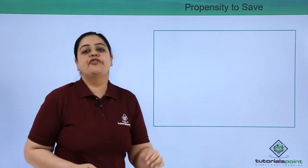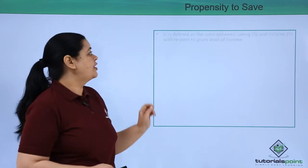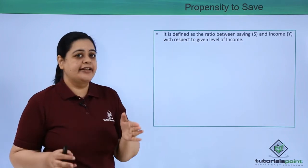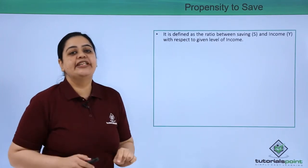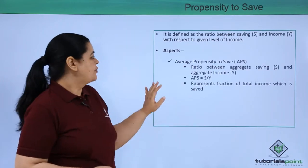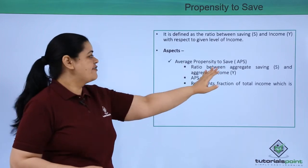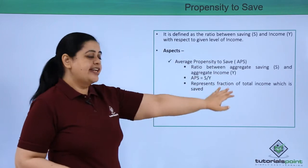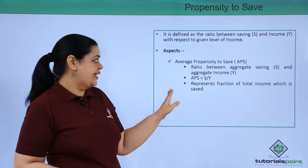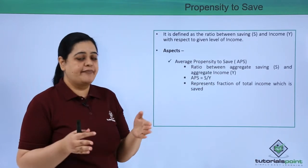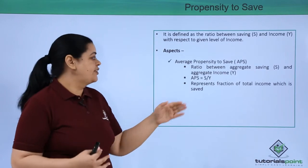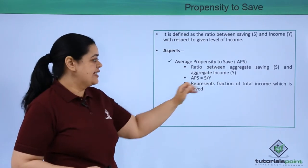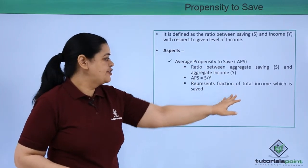Now let's understand propensity to save. This is the ratio between savings and income with respect to a given level of income. The first aspect is average propensity to save (APS), which is the ratio of aggregate saving to aggregate income — S / Y — representing the fraction of total income that is saved.